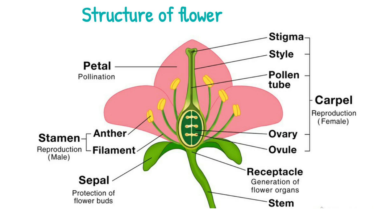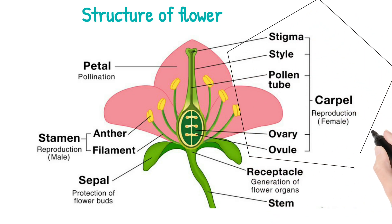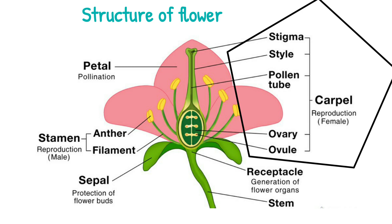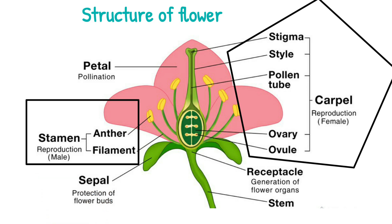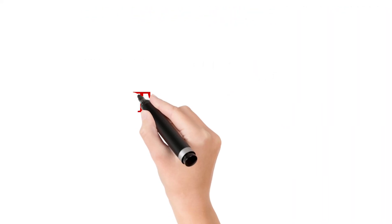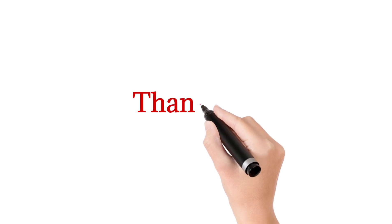Now you can see the whole structure of the flower. You can see the petal, which is brightly colored. Below that is the sepal, which is a green leaf-like structure that helps to protect the bud. You can also see the stigma, style, pollen tube, ovary, ovule, anther, and filament on the sides. The stigma, style, pollen tube, ovary, and ovule together form the female part of the flower, called the carpel. The anther and filament form the male part, called the stamen. Hope you have understood the parts of the flower — thank you, see you in the next class.